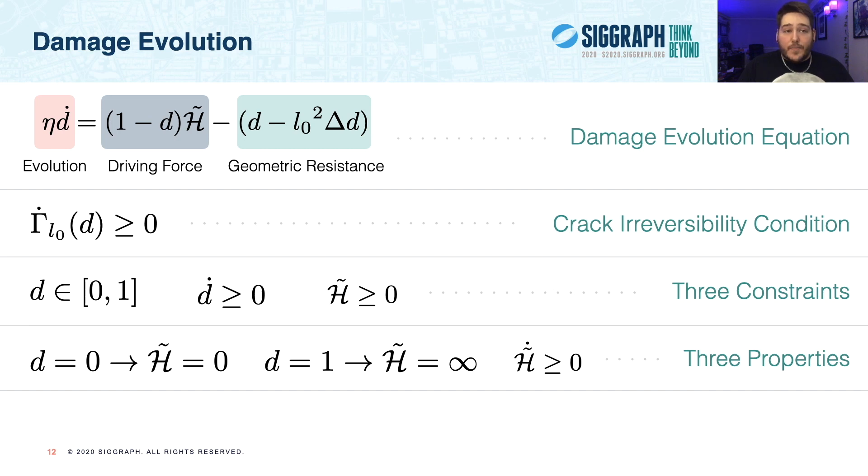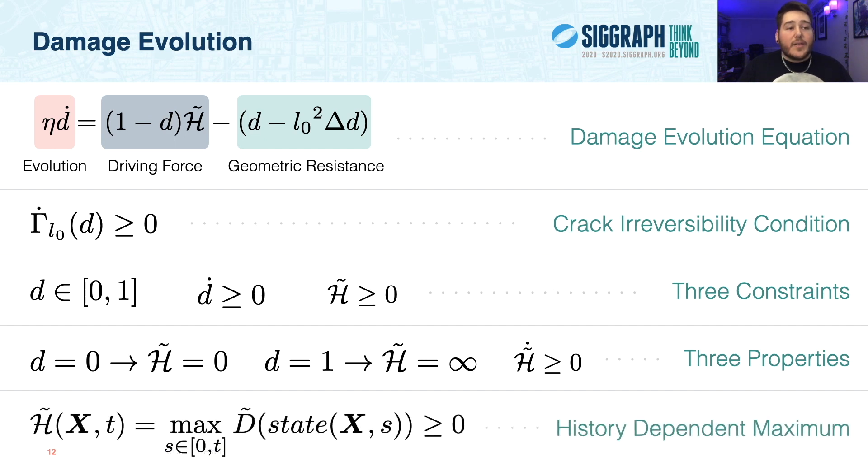More specifically, we ensure that the gradient of the crack surface function is always positive, which gives us three constraints. Specifically, damage must be bounded between 0 and 1, local cracks may only grow, and the crack driving force should be positive. And we can further manipulate our damage evolution to reveal the following properties from these constraints. For a healthy state, H should be 0, and for a full damage state, H should be infinity, and lastly, H should always be increasing. And from this, we can further glean that H must be a positive, monotonically increasing function.